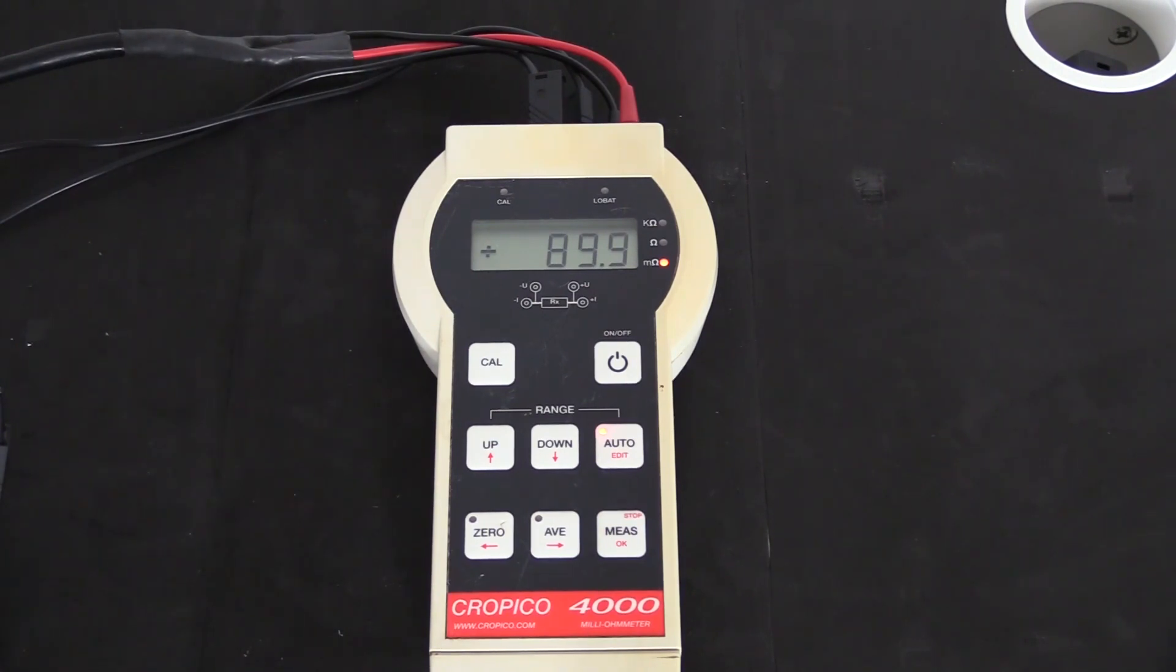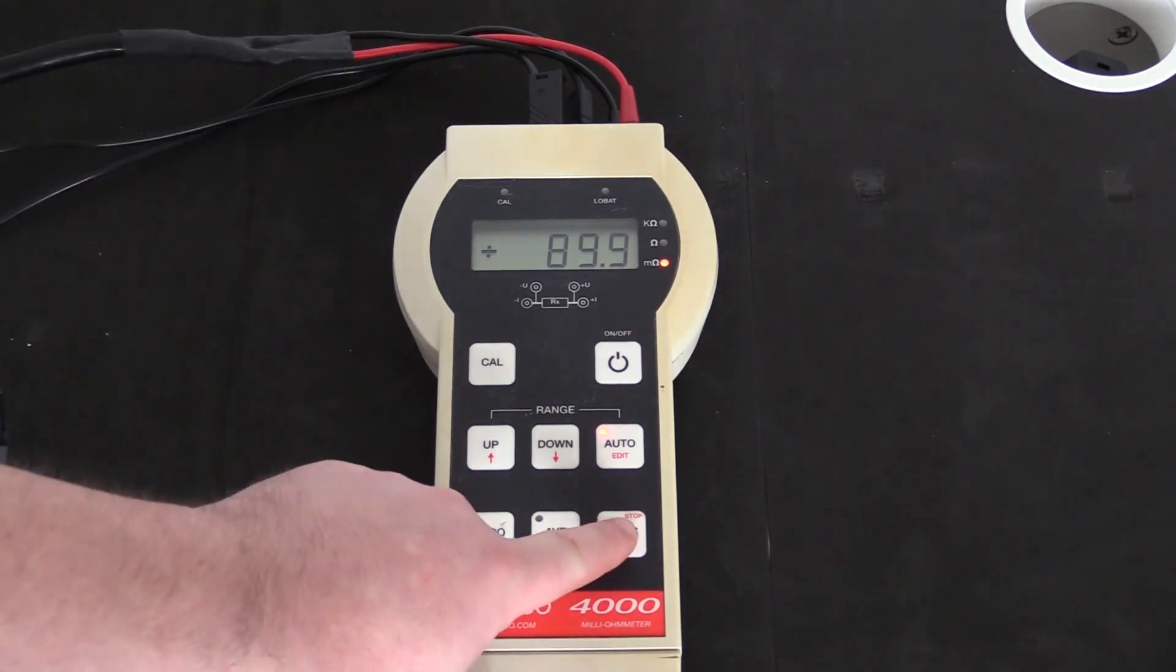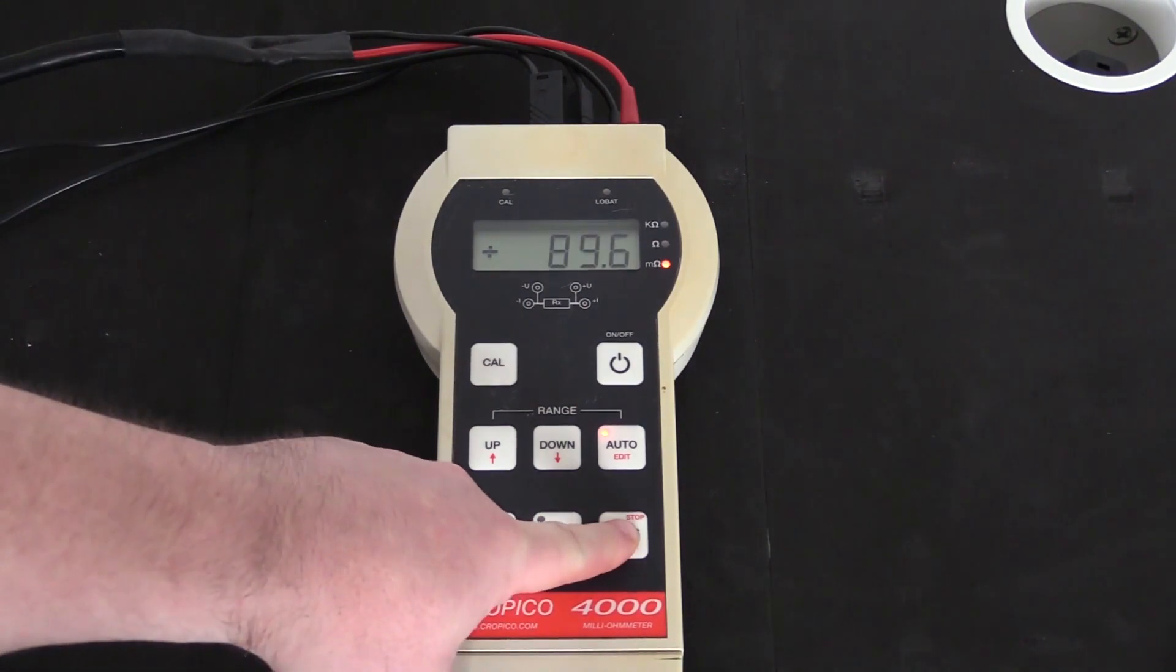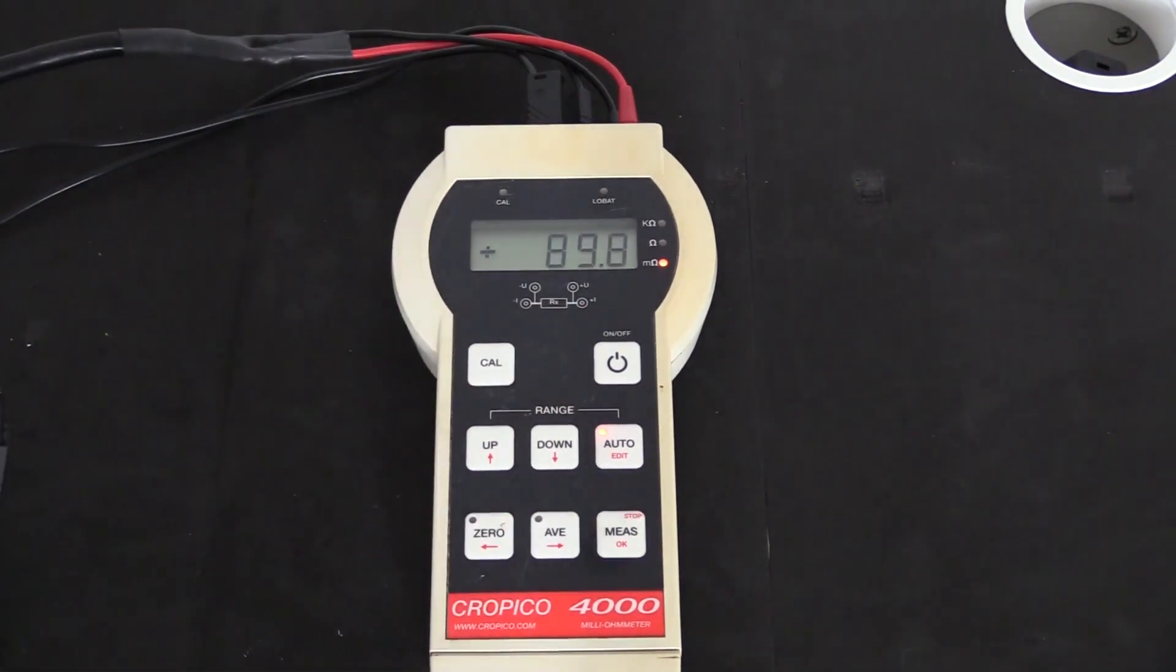If wanted, the DO4000 can be put into a continuous measuring mode. In order to do that, we simply press the measure button, hold it down for a few seconds, and as soon as we hear the beep, we can release and the DO4000 will now continuously measure the resistance.